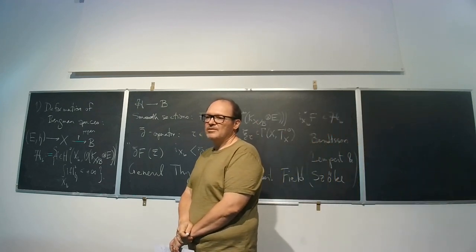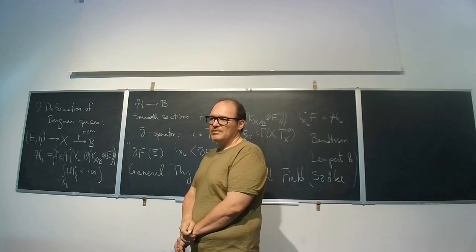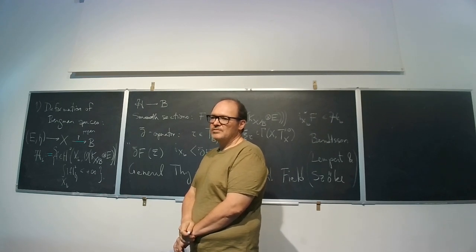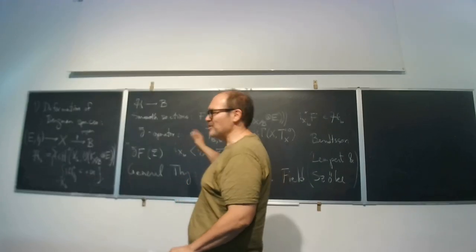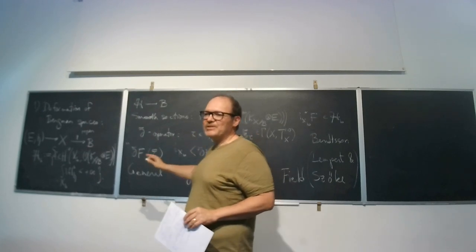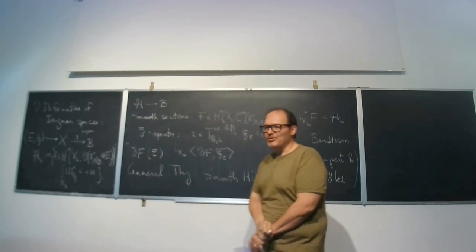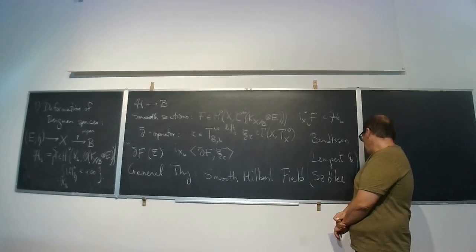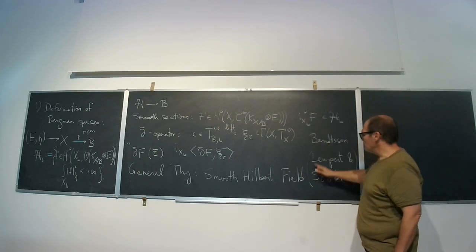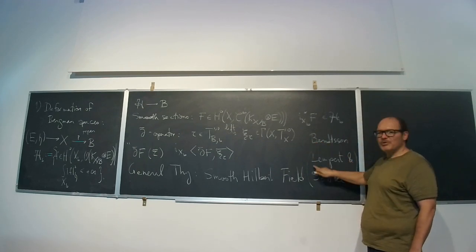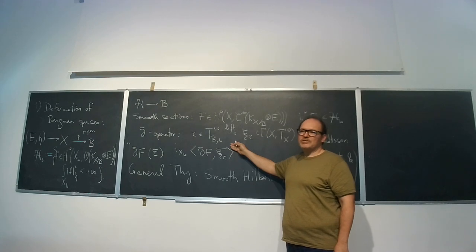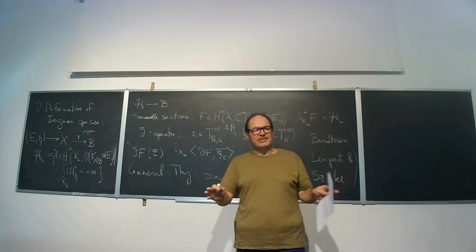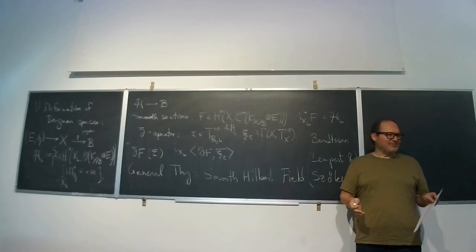If we can talk about the D-bar operator, there is a notion of holomorphic section as a direct image. But what we're doing is more general. These things will be the direct images, but basically that's what VLS means: these smooth Hilbert fields with a complex structure attached. I kind of took those ideas and declared it for myself, and named it after them.